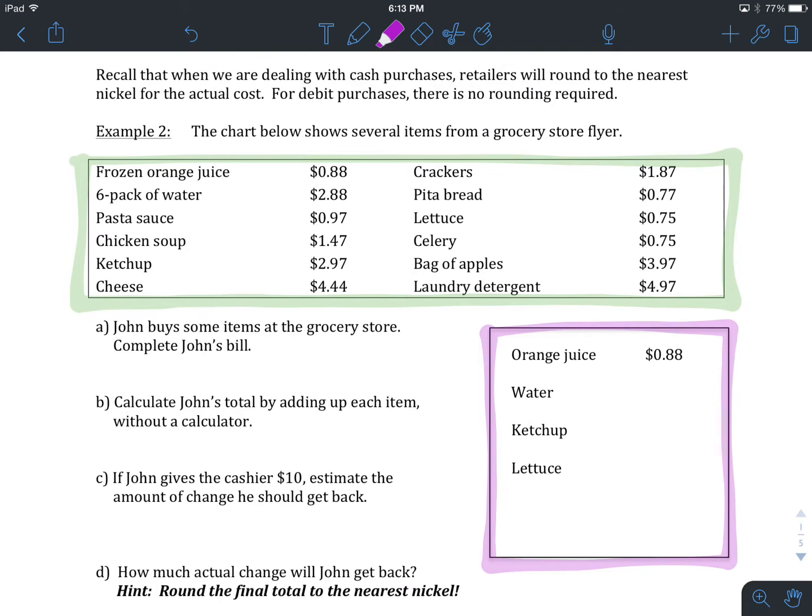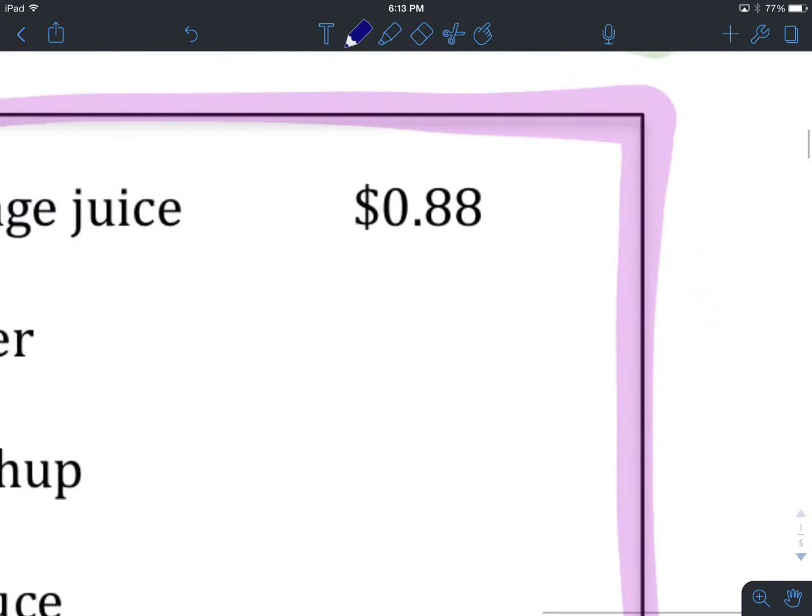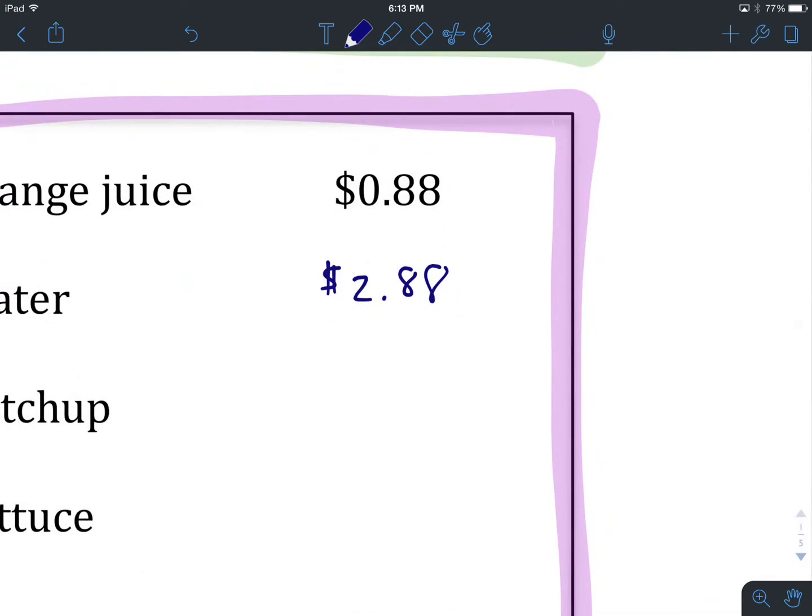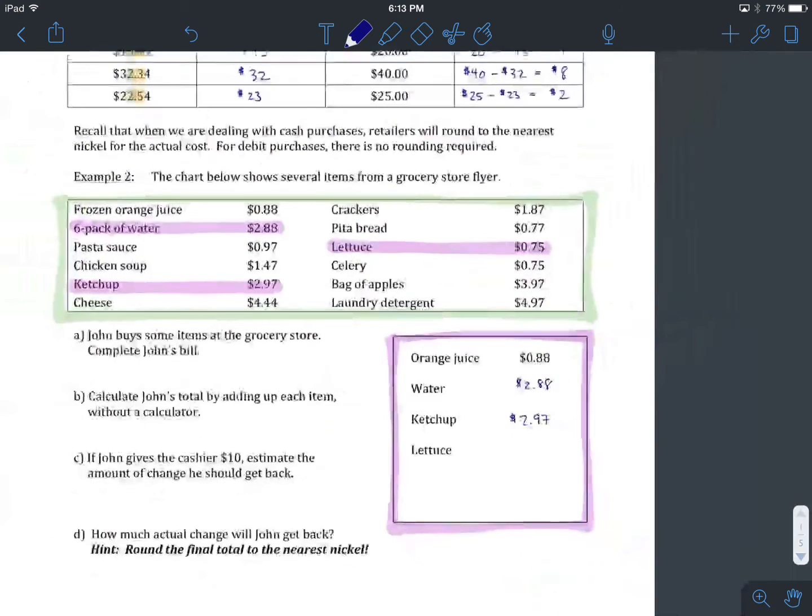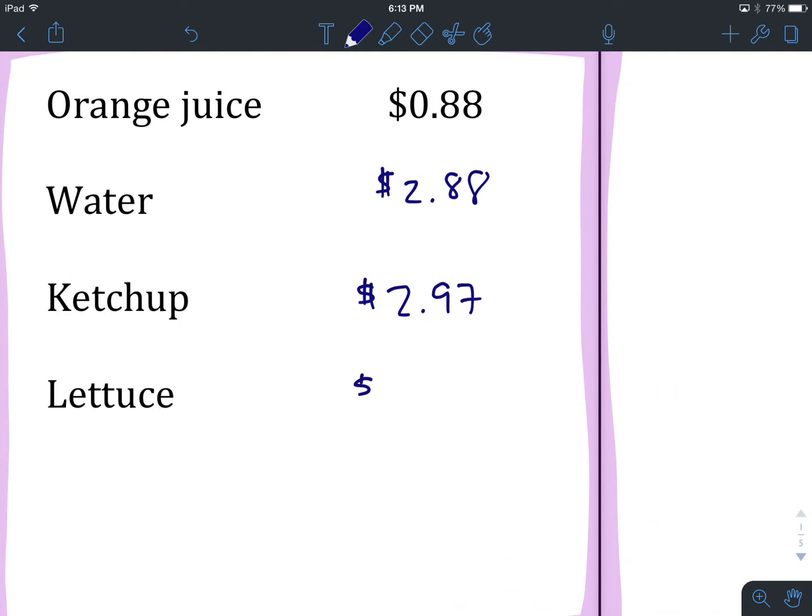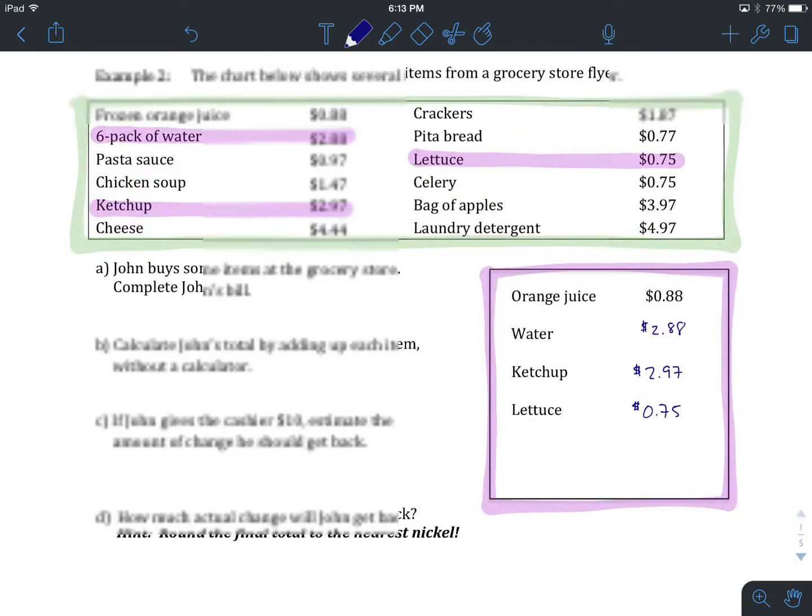Okay, you've come back, and you've filled these items in. There's the six-pack of water for $2.88. There's the ketchup for $2.97. And there's the lettuce for $0.75. So let's write some of these things down. We've got $2.88. We've got $2.97. And we've got $0.75 for our lettuce. So we have completed John's bill.